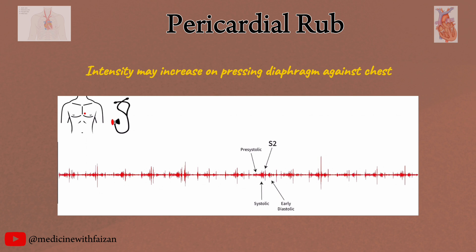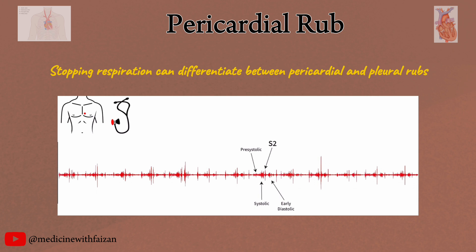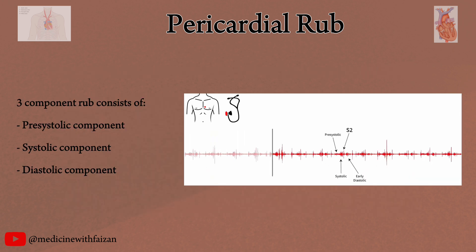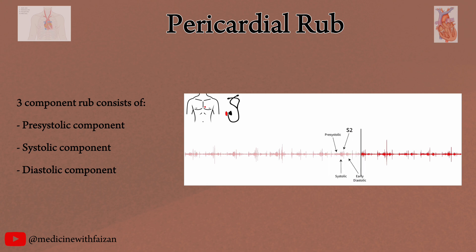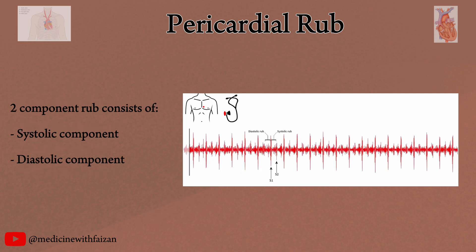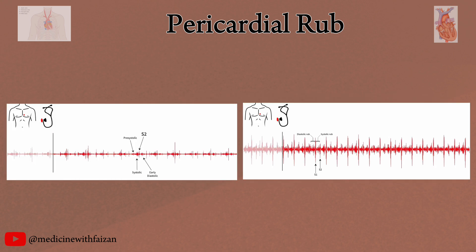The intensity of the friction rub may increase on pressing the diaphragm firmly against the patient's chest, or if the patient is asked to stop breathing for a moment. Suspension of respiration can also help differentiate between pericardial and pleural rubs, as pleural rubs occur only during respiration. Rubs consist of one to three sounds that may be mistaken for murmurs, especially a holosystolic murmur if it is a two-component friction rub. Classically, three components correlate with atrial contraction just before S1, ventricular systole between S1 and S2, and the rapid filling phase of diastole right after S2. Compare a patient with a three-component friction rub with a patient having a two-component friction rub.